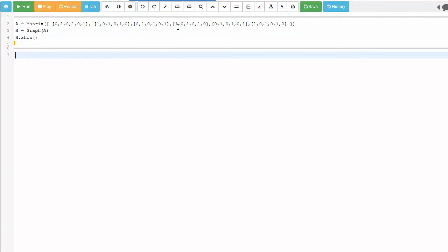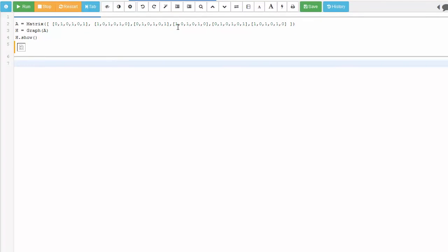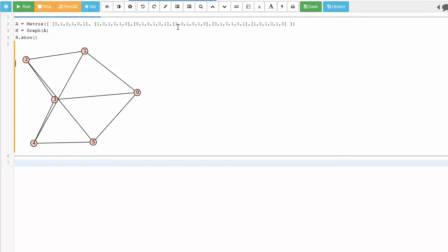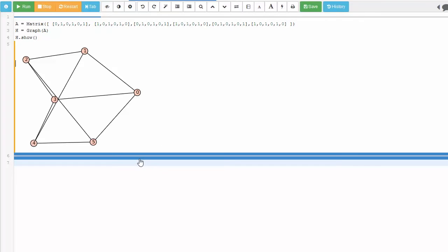Now when we ask it to show us the graph, we'll see that it has labels 0, 1, 2, 3, 4, and 5. Obviously SAGE uses this as a default. It's not going to label them A, B, C, D, E, F as we had in mind. But you can see that the graph we have here looks exactly like the graph H that we were looking at before.